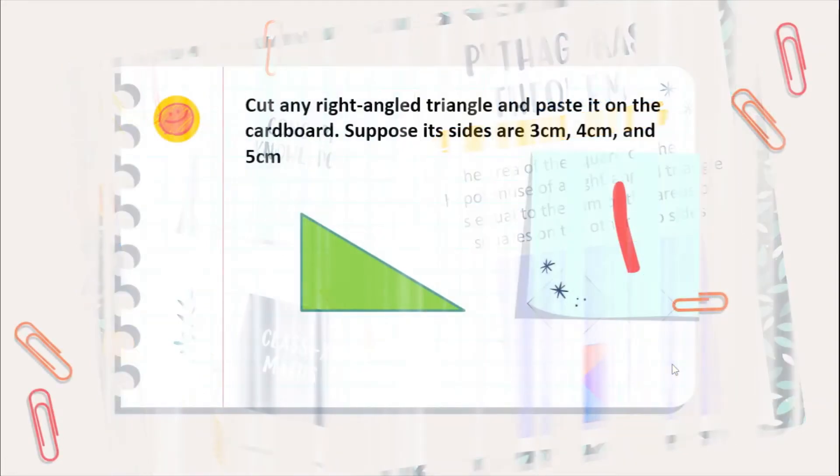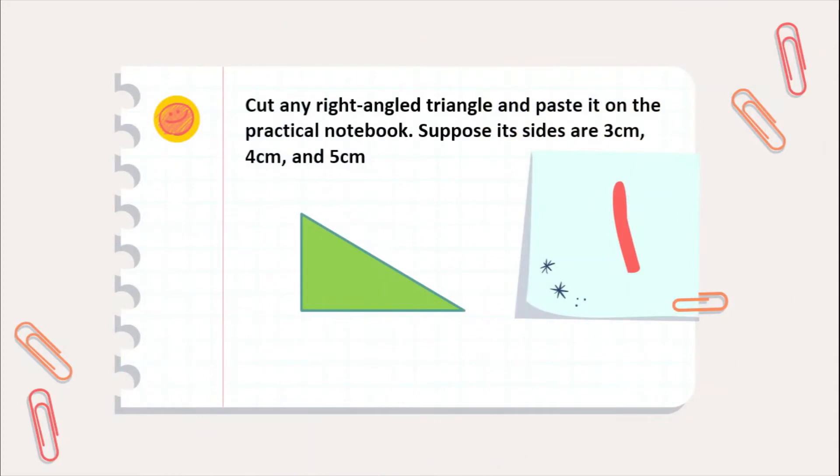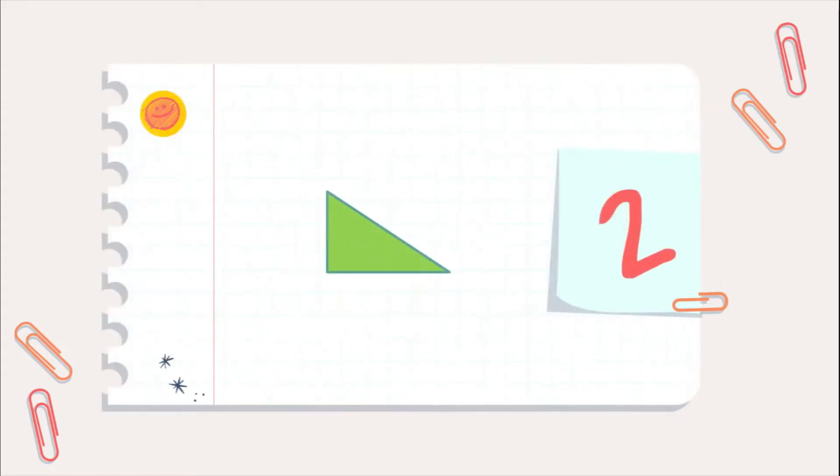Now, let us start with the procedure. So, for step 1, cut any right angle triangle and paste it on your practical notebook. And consider the sides as 3 cm, 4 cm and 5 cm. You can also take 6, 8 and 10 cm. Right? And then, in the next step,